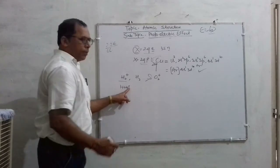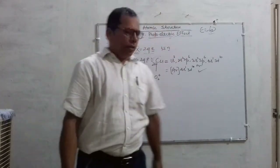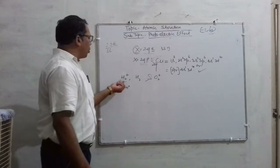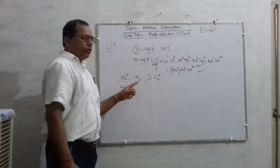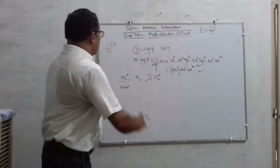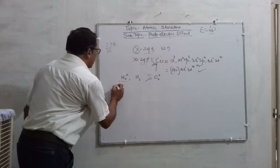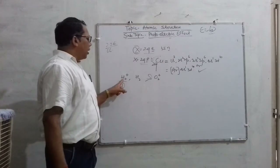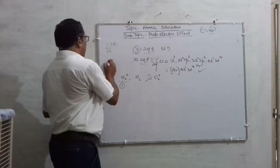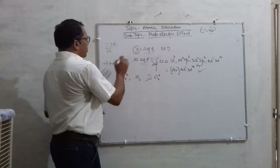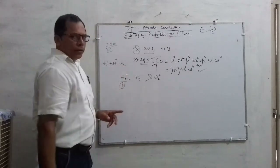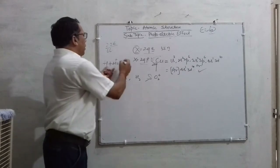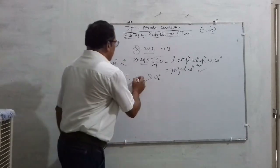H₂⁺ means there are two protons and two electrons, but the plus sign shows that one electron has been removed or lost. So the number of electrons in H₂⁺ will be only one. For H₂: H and H form H₂, with one electron each, so number of electrons is two.